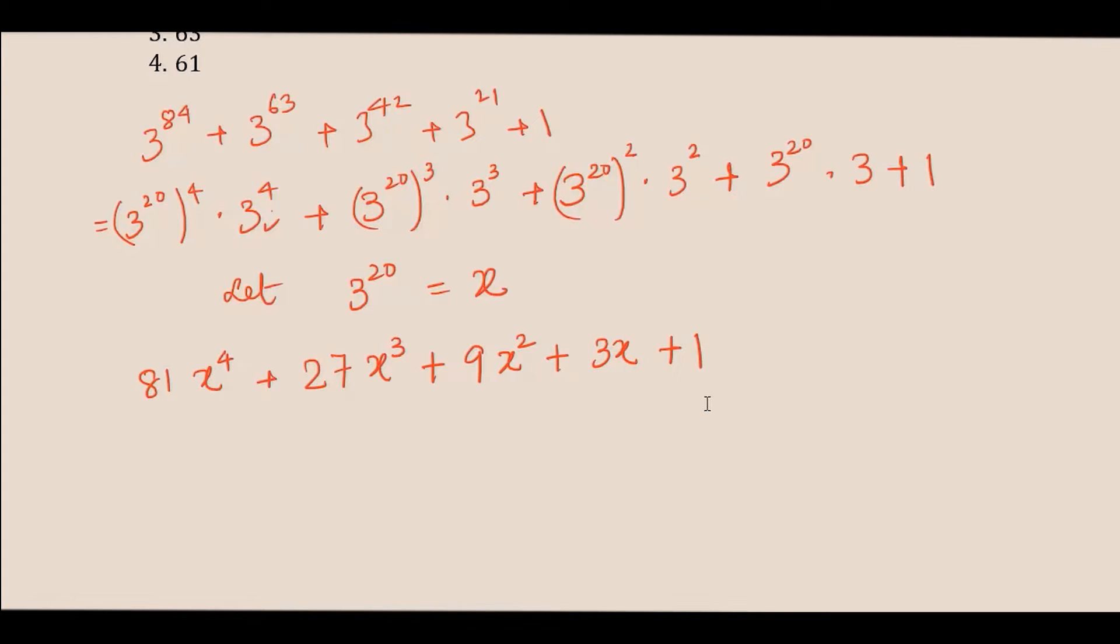Now we have x plus 1 as the divisor, and from here the value of a is minus 1. So you would just put this as, suppose this is f(x). What would be f(a)? f(a) would be 81 times minus 1 to the power 4 plus 27 times minus 1 to the power cube plus 9 times minus 1 to the power square plus 3 times minus 1 plus 1. And from here you would get 61 as the remainder.